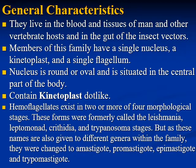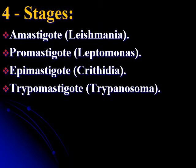Haemoflagellates exist in two or more of four morphological stages. These forms were formerly called leishmania, leptomonad, crithidia, and trypanosoma, and these names were then given to different genera within the family. They were changed to amastigote, promastigote, epimastigote, and trypomastigote. The amastigote has the old name leishmania; promastigote, old name leptomonas; and trypomastigote, old name trypanosoma.